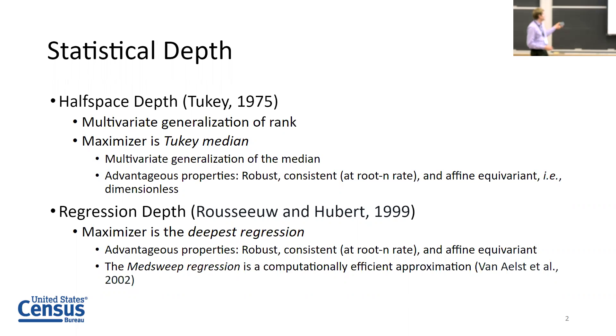The first notion is halfspace depth. We already heard a little bit about this from Kelly's presentation yesterday. This is a multivariate generalization of rank. Maximizing rank gives you the median, so maximizing the halfspace depth gives you a multivariate generalization of the median known as the Tukey median or the halfspace median.